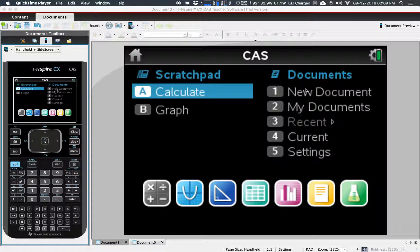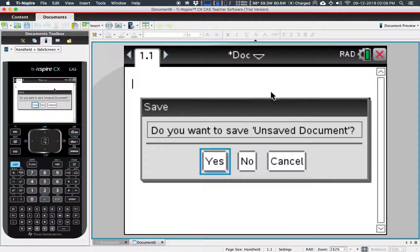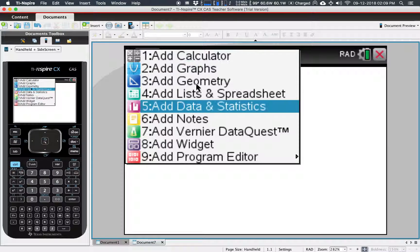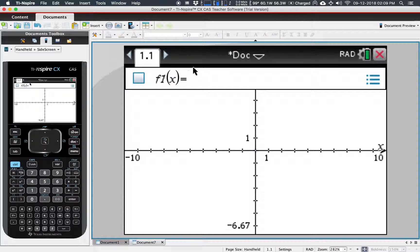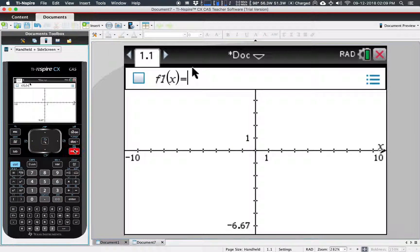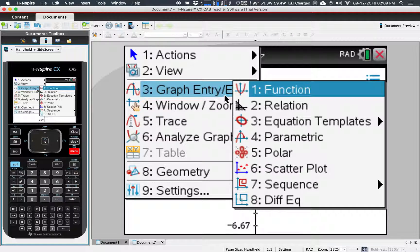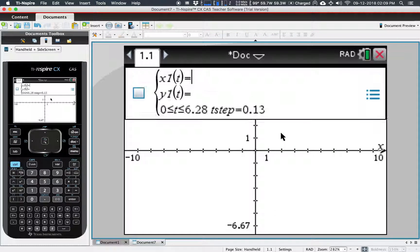Graph a parametric equation and determine its direction on the Nspire the easy way. Open a new document, add a graph, then go to menu 3 Parametric.